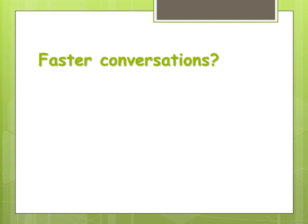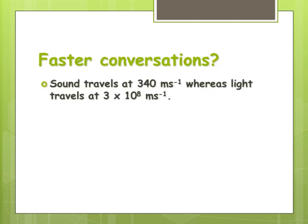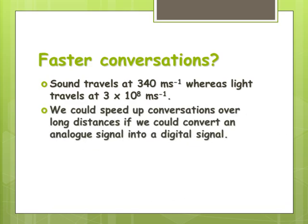Sound travels at about 340 meters per second. Light's traveling around 3 times 10 to the 8 meters per second. So we can speed up conversation or information transfer over long distances if, instead of using analog signals, we convert it to digital signals. That means that we can be sending the information via light at the speed of light over long distances, so it travels very quickly. And the other advantage there is that we have minimal loss. You've only got to determine whether the light was switched on or switched off.